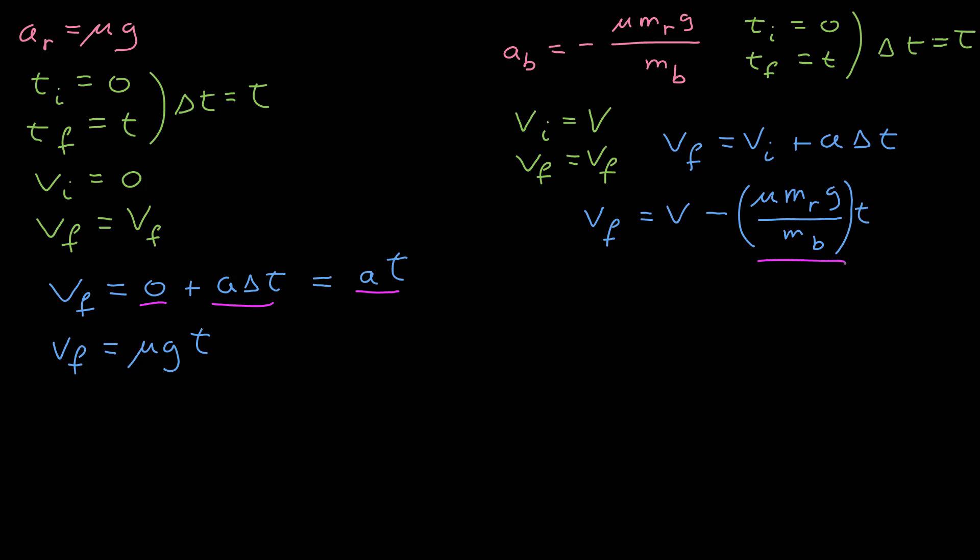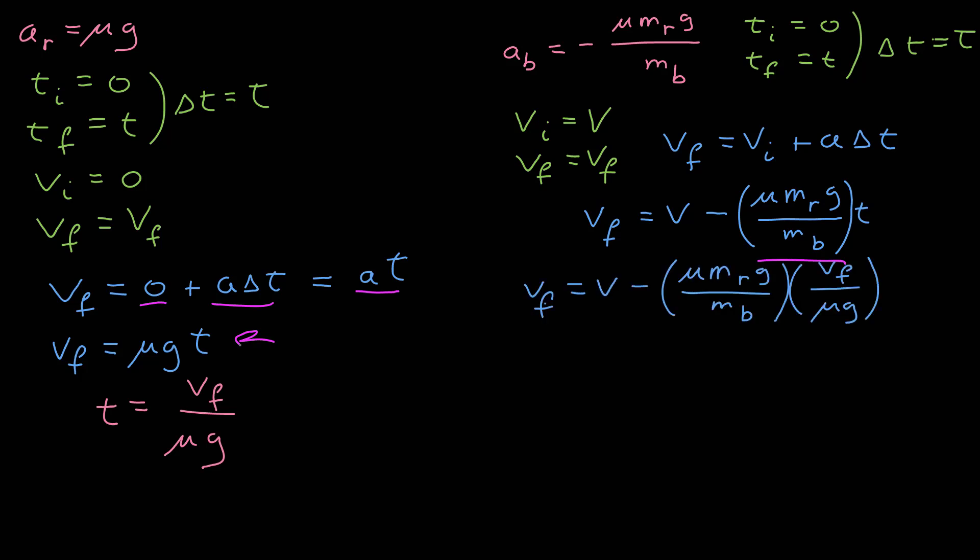Now I have two equations and two unknowns. I want to find v final, and I don't know time. So I'm going to solve one equation for time and then substitute it into the other. Time is v final over coefficient of friction times g.